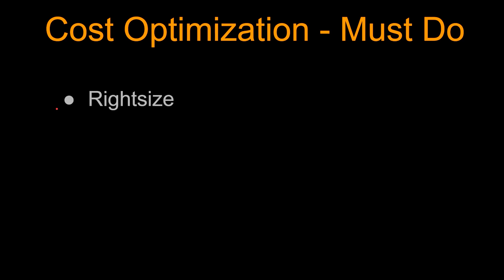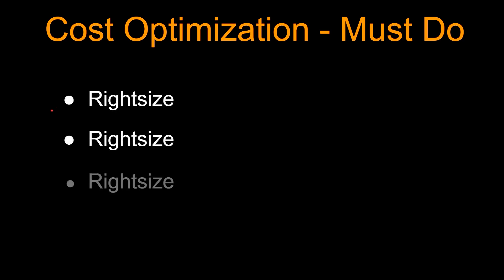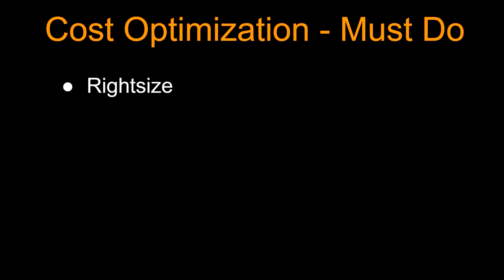So here is my top three recommendation to optimize cost in AWS. These are must-dos: right size, right size, and right size. Okay, jokes apart — right size is the number one thing to do.